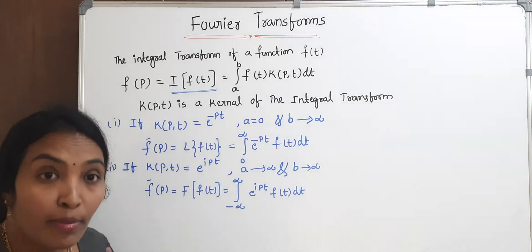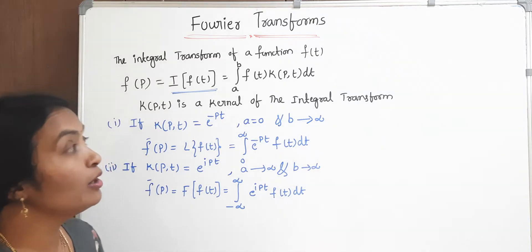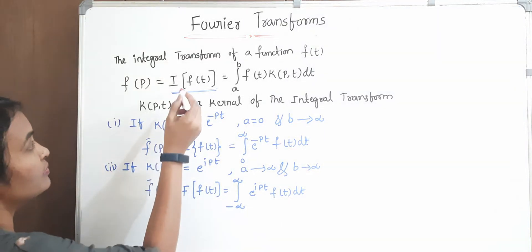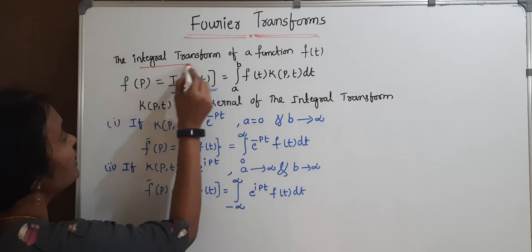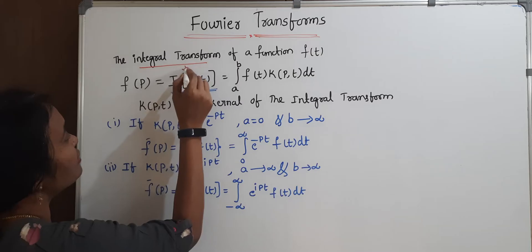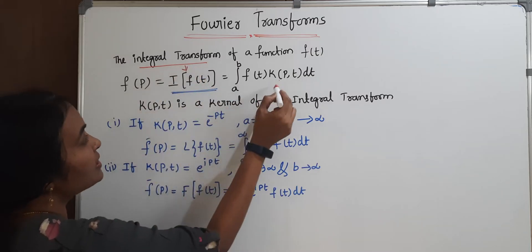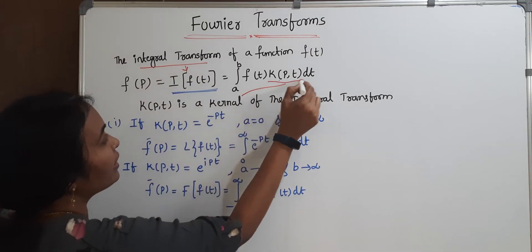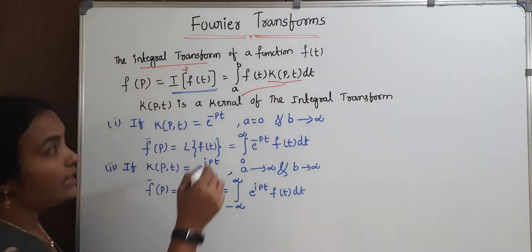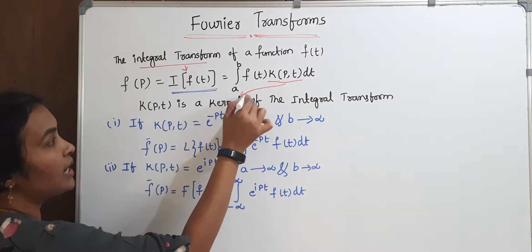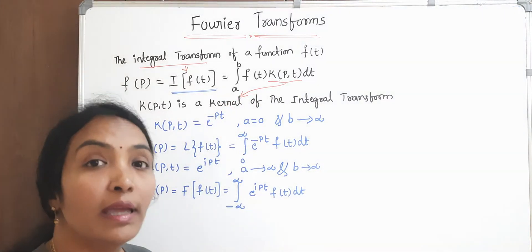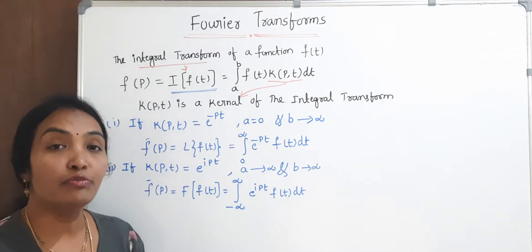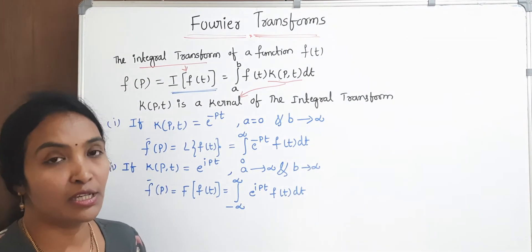Here, k(p,t) is nothing but the kernel of that integral transform. This is the integral transform. The transform will change depending upon the kernel value.